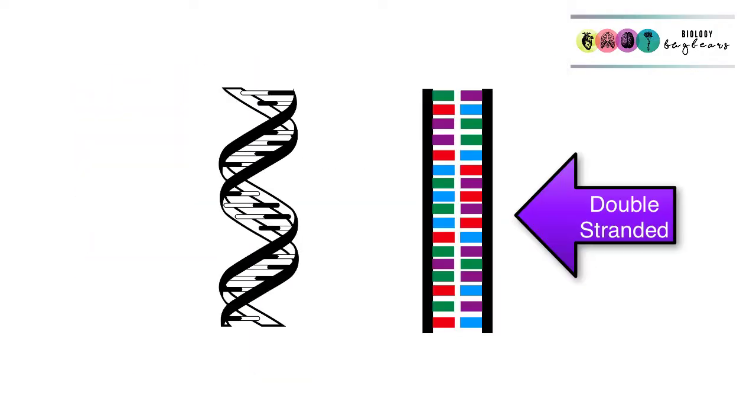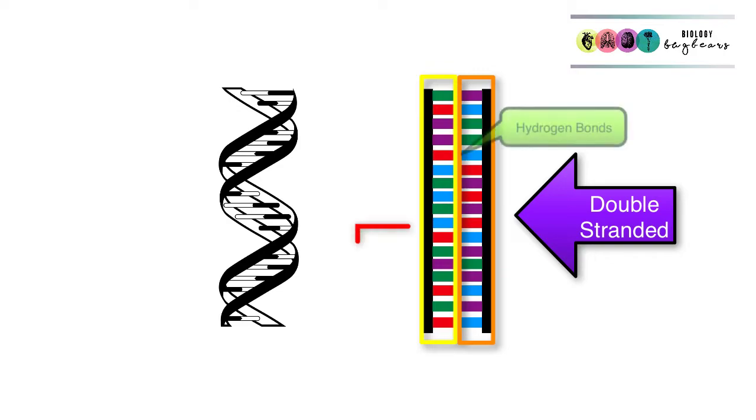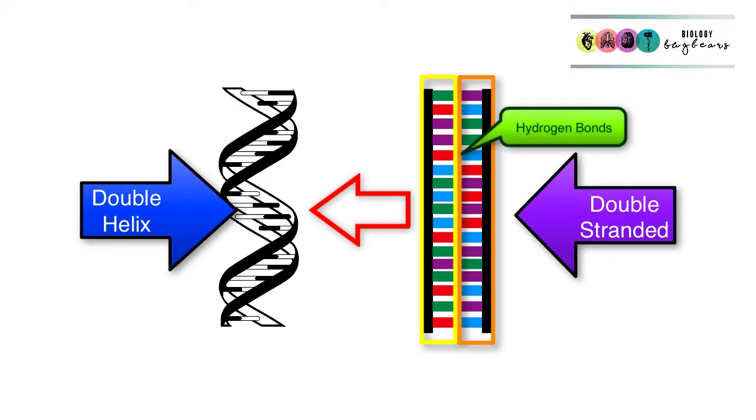DNA is this double stranded molecule and the two strands are attached to each other by hydrogen bonds. This double stranded molecule is twisted into this double helix.